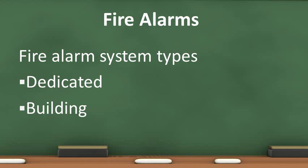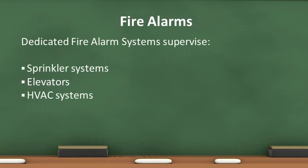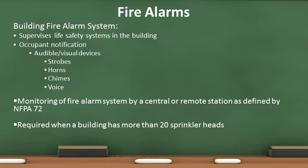The types of alarm systems we will cover are dedicated fire alarm systems and building fire alarm systems. The purpose of a dedicated fire alarm system is to supervise sprinkler systems, elevators, and HVAC systems. These systems help by restricting fire movement from the area of origin and evacuating people from the building. The purpose of building fire alarm systems is to supervise life safety systems in the building, such as the occupant notification appliances, which produce an audible or visual warning to alert occupants of fire danger.